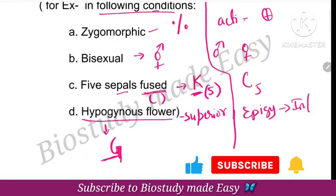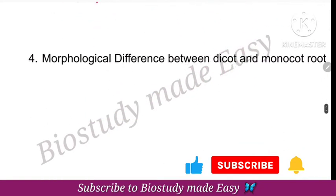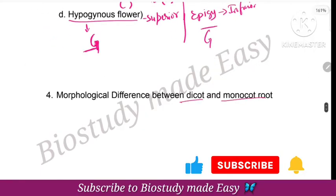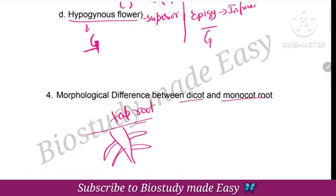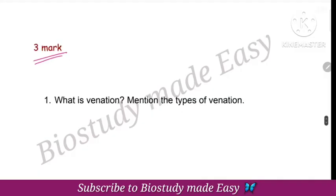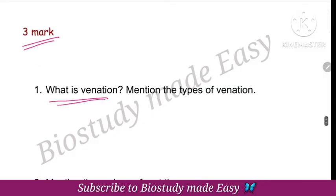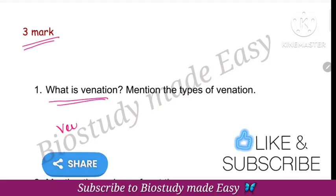Epigynous flower has an inferior ovary, represented with the line below the gynoecium symbol. Morphological difference between dicot and monocot root: dicot has a tap root system.